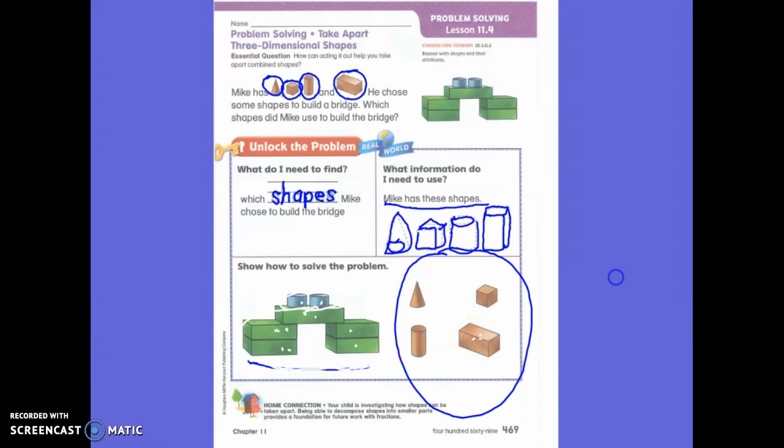Did I circle rectangular prism? Did I circle rectangular prism? No. Did I circle rectangular prism? No. Did I circle rectangular prism? No. Did I circle the cylinder? No. Did I circle the cylinder? So you should have circled those two shapes.